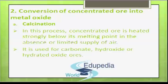The ore can be subjected to either calcination or roasting. First, we will discuss calcination. In this process, the carbonate ores are subjected to calcination. Calcination is a process in which the concentrated ore is heated strongly below its melting point in the absence or limited supply of air. Calcination is used for carbonate, hydroxide, or hydrated oxide ores.